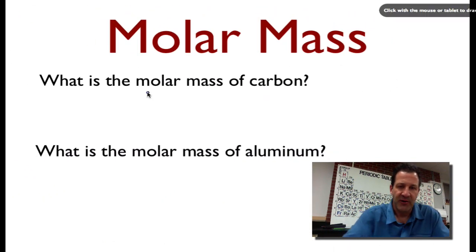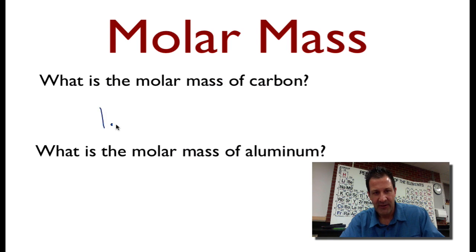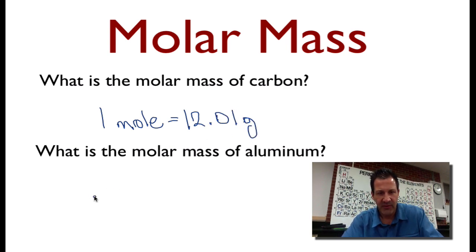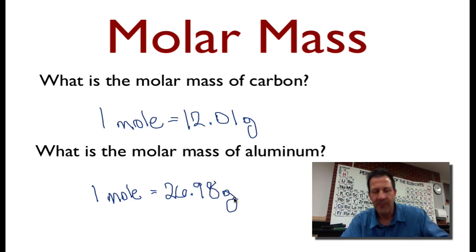So I'm just going to write that down. I just don't write down 12.01. I put one mole is equal to 12.01 grams. And I can do the same thing for aluminum. One mole is equal to 26.98 grams. I got those numbers right off my periodic table.